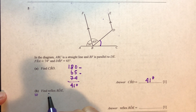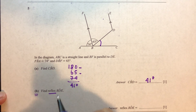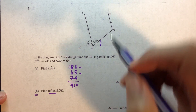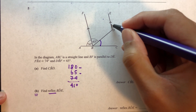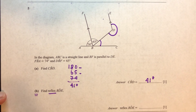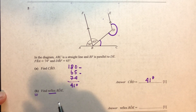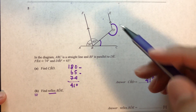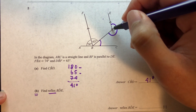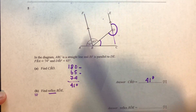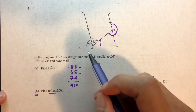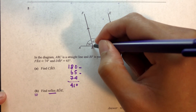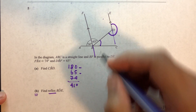Now part b: find the reflex angle BDE. A reflex angle is more than 180 but less than 360 degrees. Since the two lines are parallel, we extend them and observe the relationship between the angles. Continuing the lines, we can identify the corresponding angles.